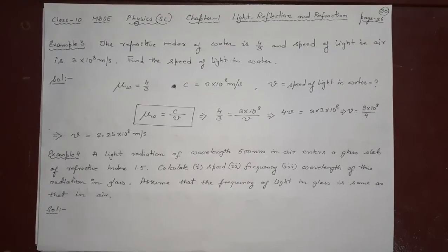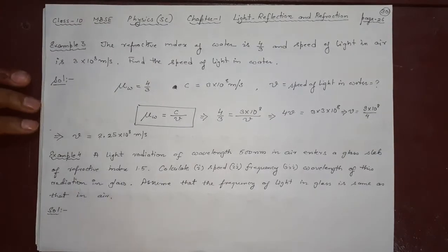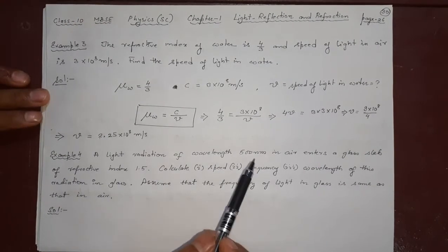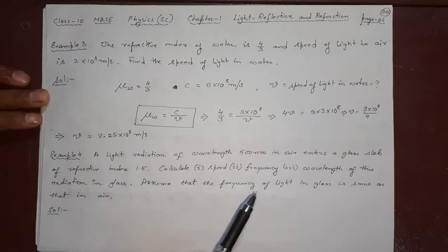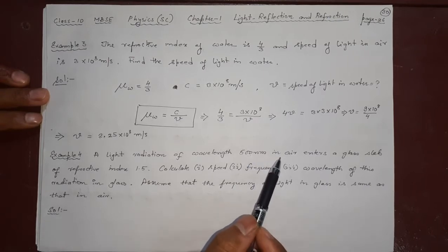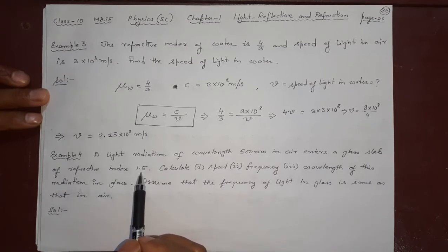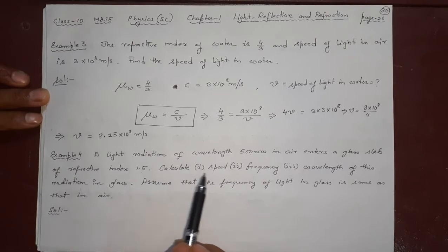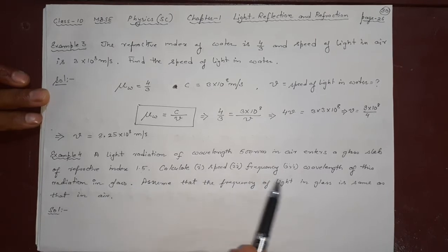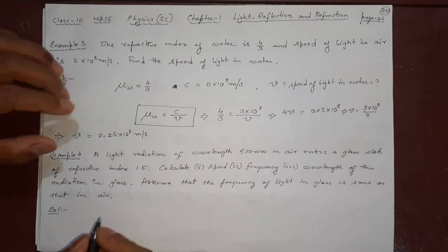Welcome viewers to the SD Online Classes. We are continuing with example number four. A light radiation of wavelength 500 nanometers in air enters a glass slab of refractive index 1.5. We need to calculate the speed, frequency, and wavelength of this radiation in glass. We assume that the frequency of light in glass is the same as that in air.